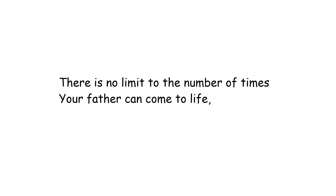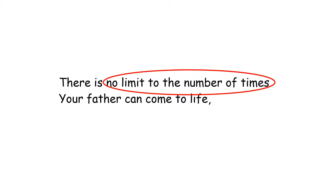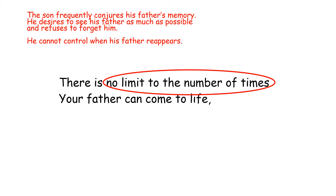The first lines — there is no limit to the number of times your father can come to life — can be a little confusing. We know that it's not literally true that people can come back to life or be resurrected. If we focus on the phrase there is no limit to the number of times, there is a suggestion that this father comes back to life numerous times. The son is frequently conjuring his father's memory. I don't think the father is literally coming to life — I think the thing that keeps returning to the son is the memory of that father. There could be a suggestion that he desires to see his father as much as possible and refuses to forget him.